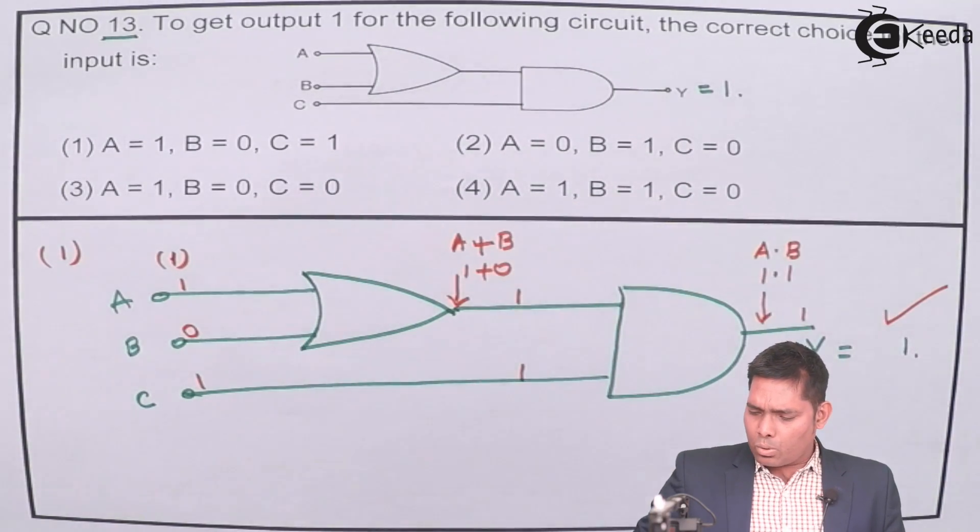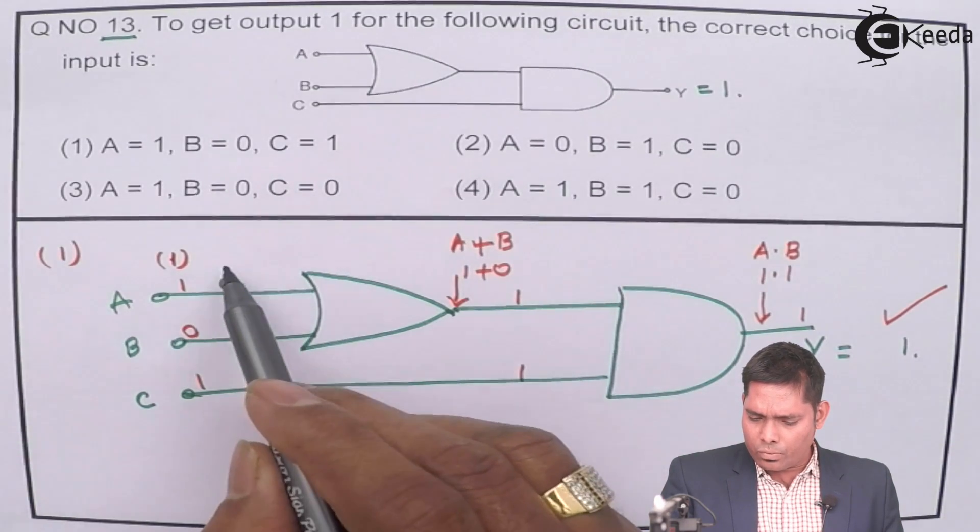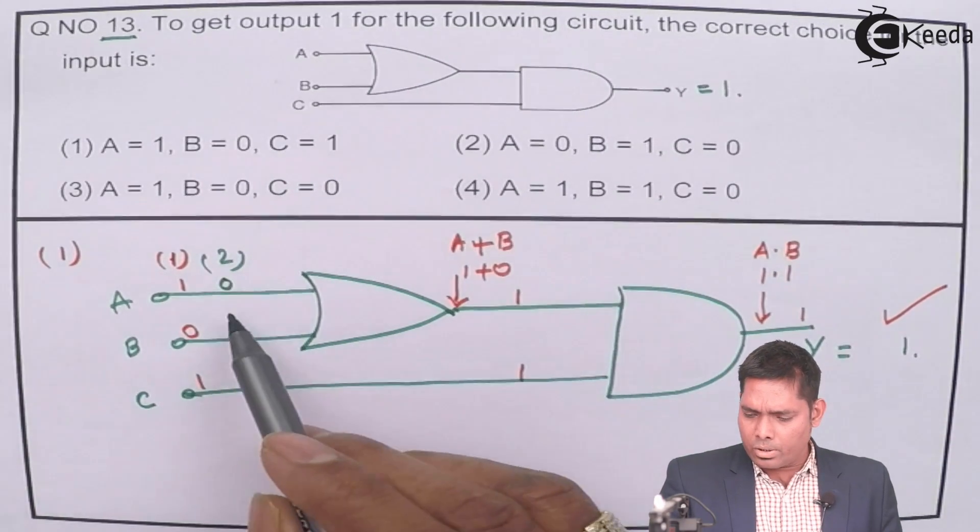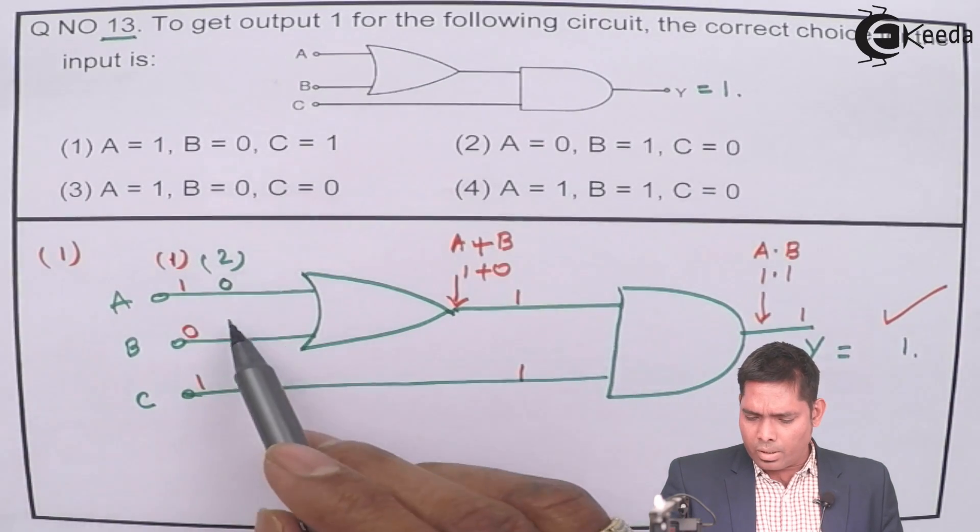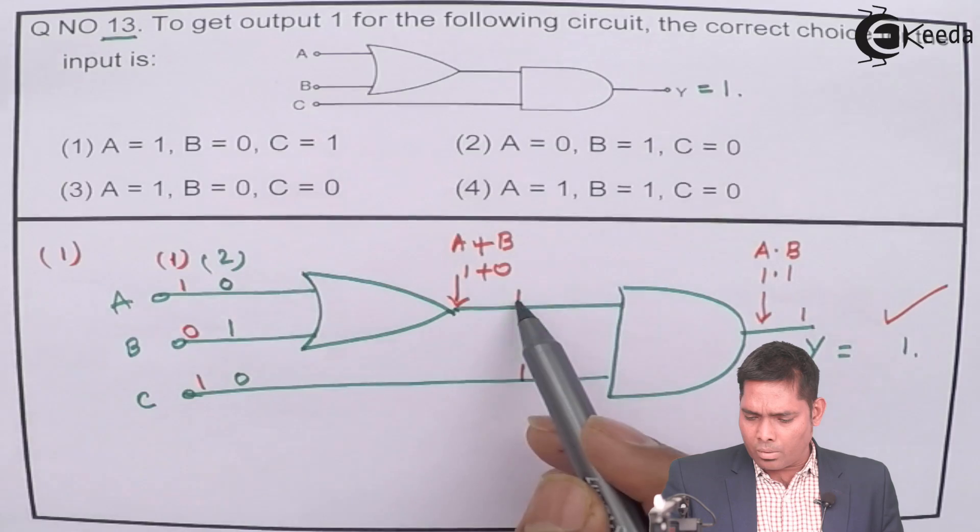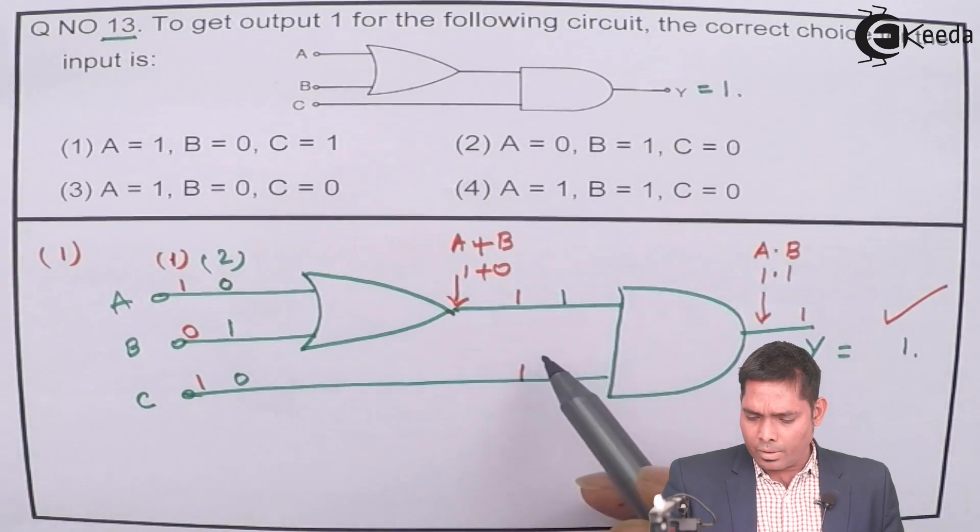Suppose option number 2 I get first: A is 0, B is 1, C is 0. This and that, this is the product, no doubt about that. The product will be 1 only.